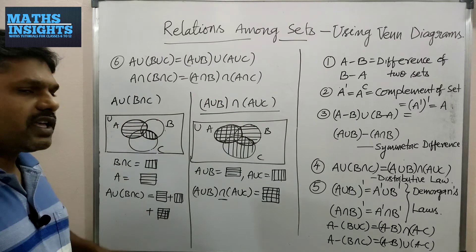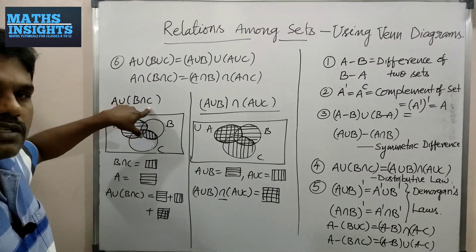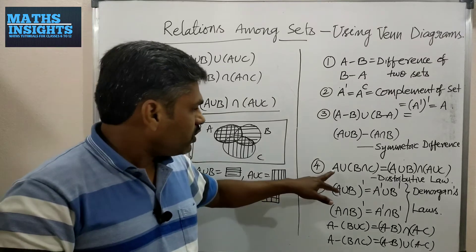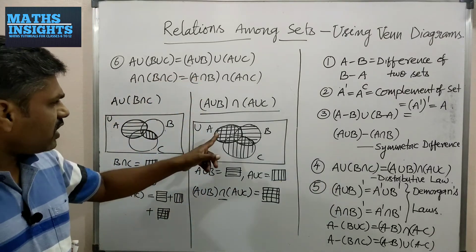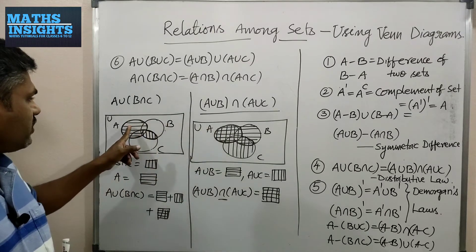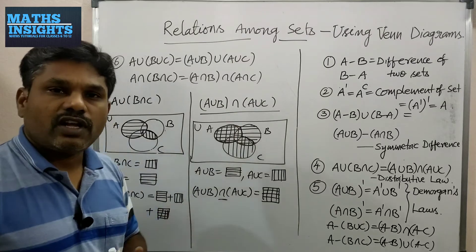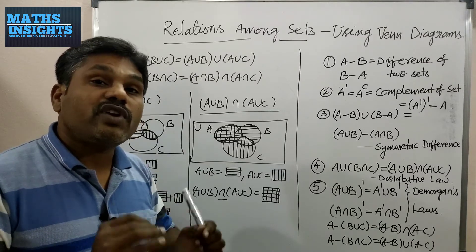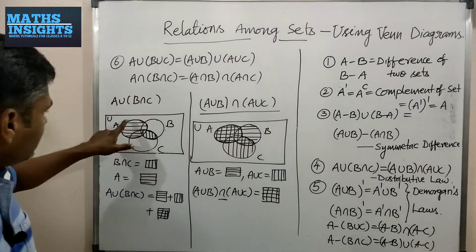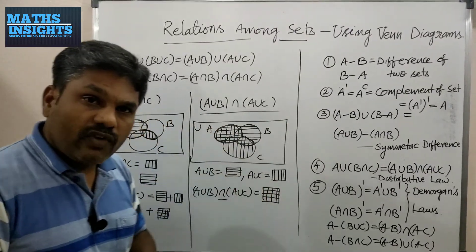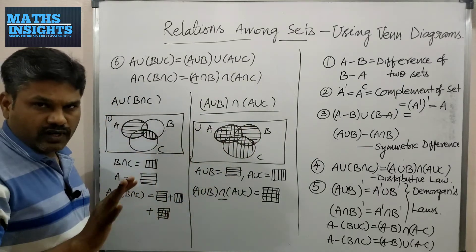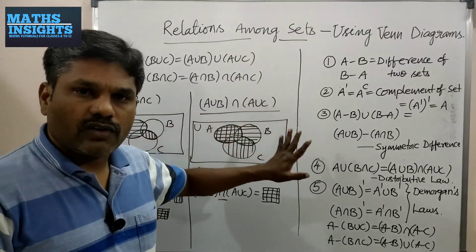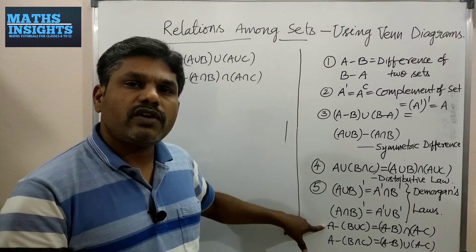Observing the two Venn diagrams, the area showing A∪(B∩C) and the area showing (A∪B)∩(A∪C) are the same. Students may be confused because one diagram uses both lines and the other uses only horizontal lines, but remember: focus on the area, not the lines. Both cases represent the same area, therefore these two sets are equal — proving the distributive law.